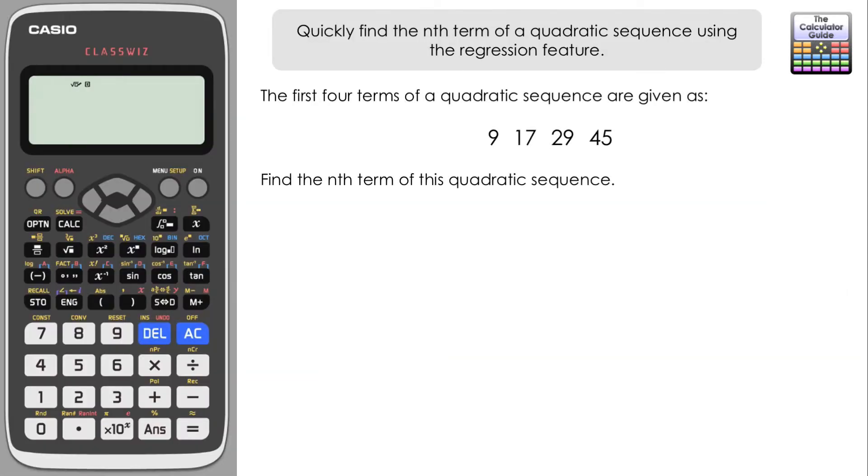I've previously done a video showing you how you can use the simultaneous equation solver from the Casio ClassWiz to quickly find the nth term of a quadratic sequence. While there is another method that we can use to find the nth term of a quadratic sequence, this time using the regression feature which is on the ClassWiz as well as many other calculators.